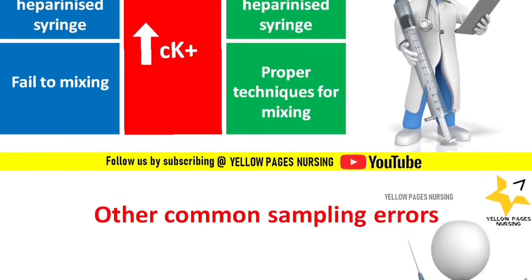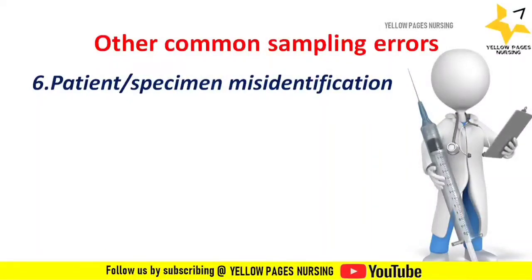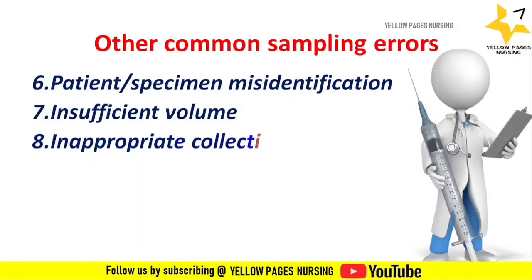Other common sampling errors include patient or specimen misidentification, which can be prevented by proper identification using a minimum of 2 identifiers and labeling the sample before puncturing. Insufficient volume can be prevented by using self-filling syringes or collecting at least a minimum of 1 to 2 ml of blood.